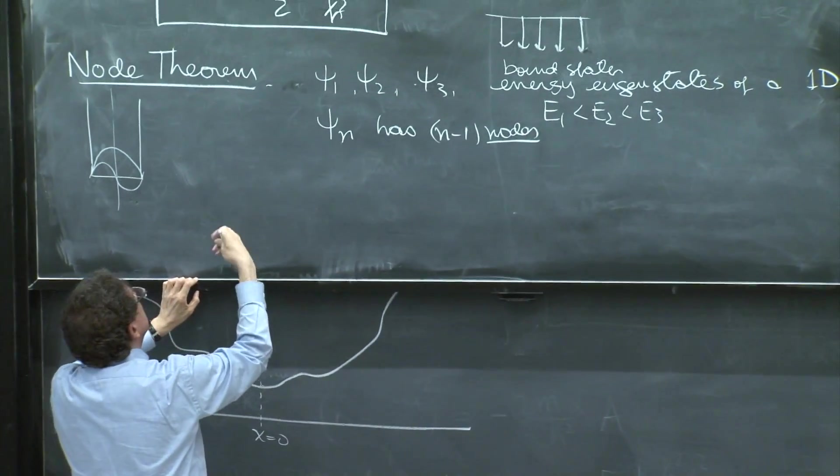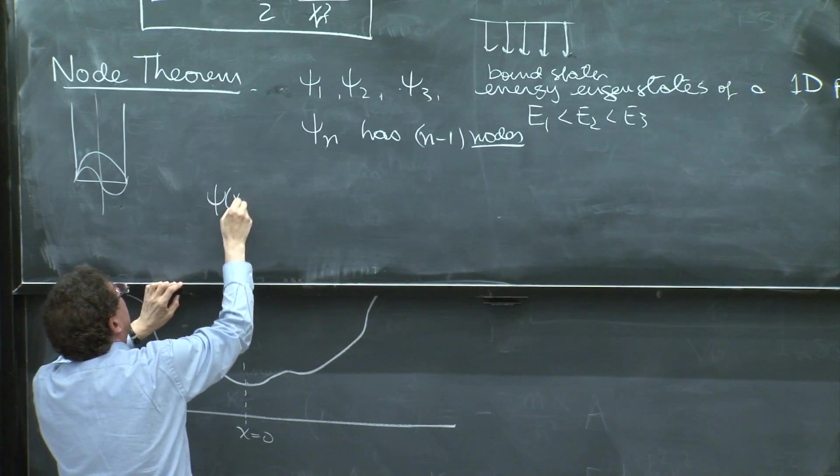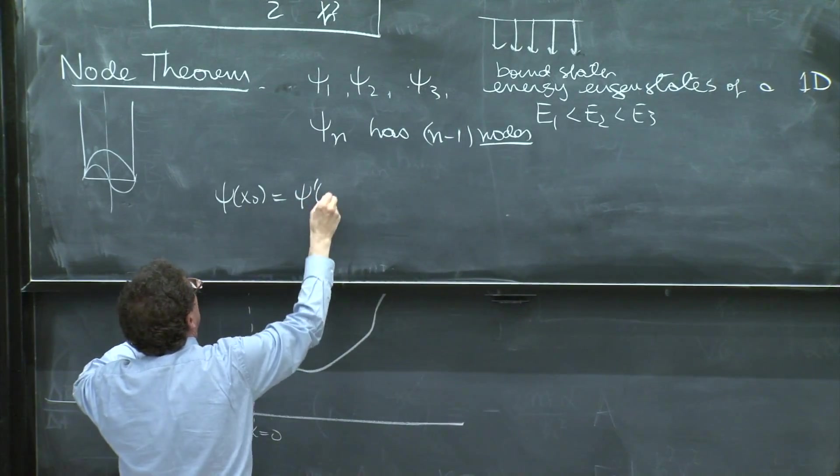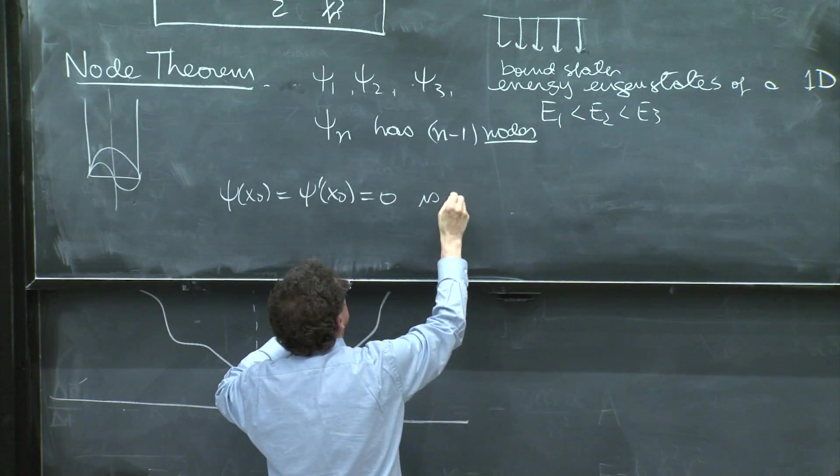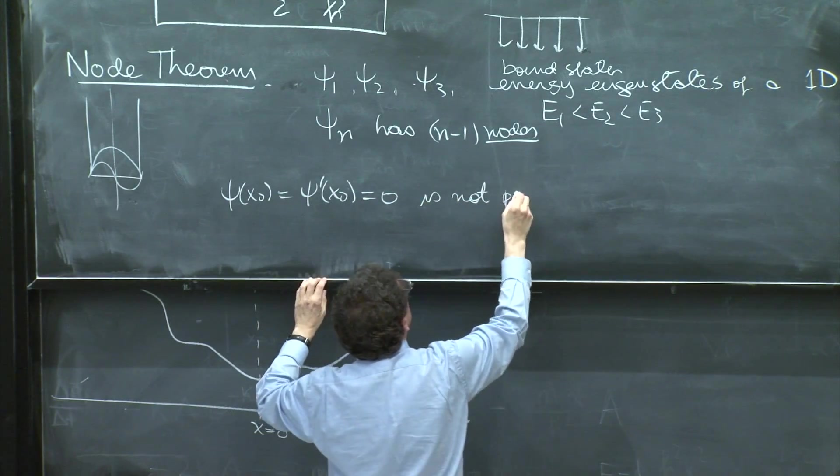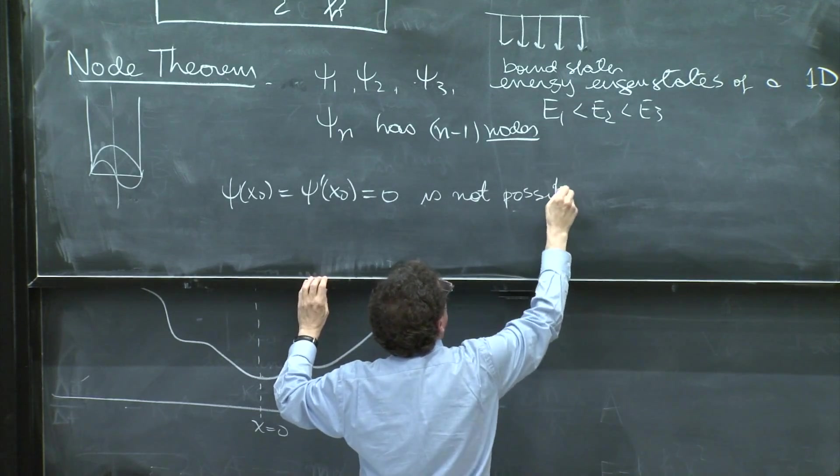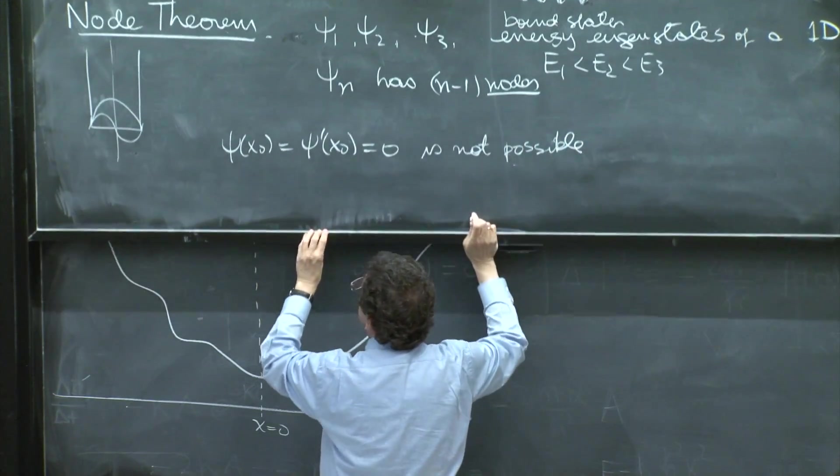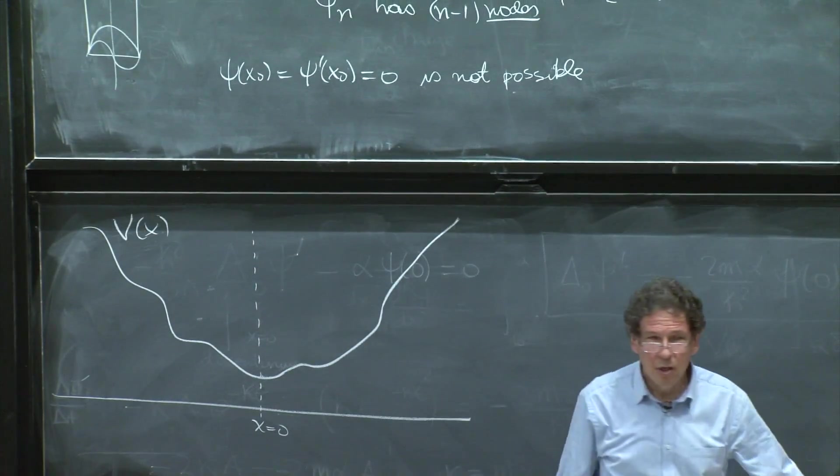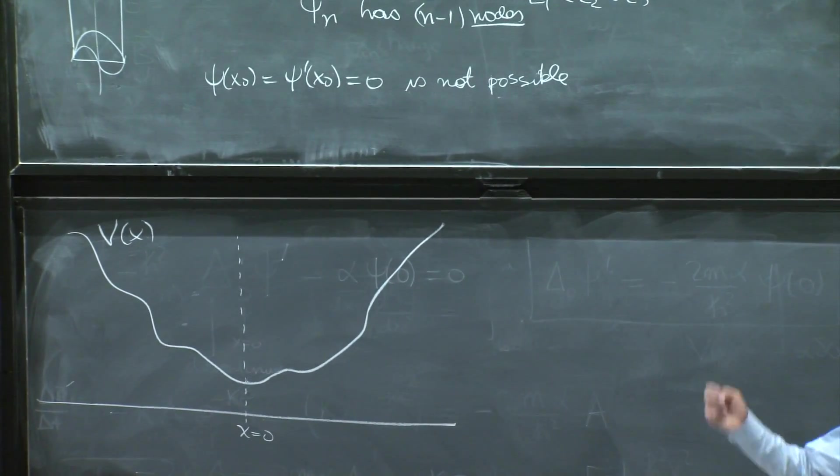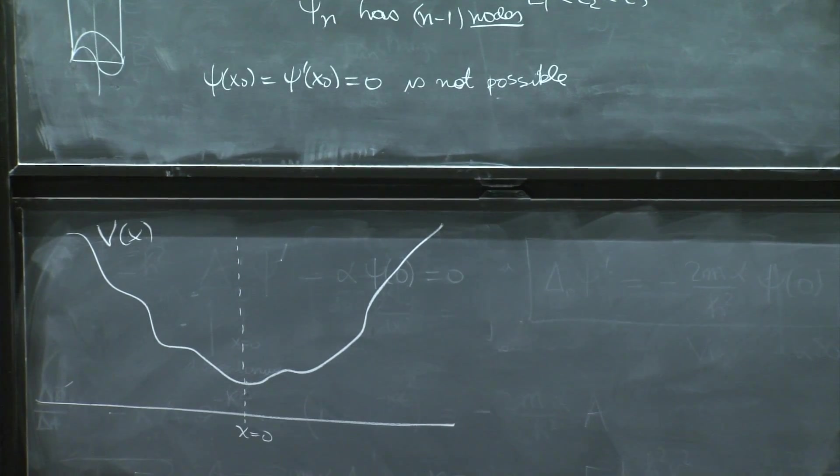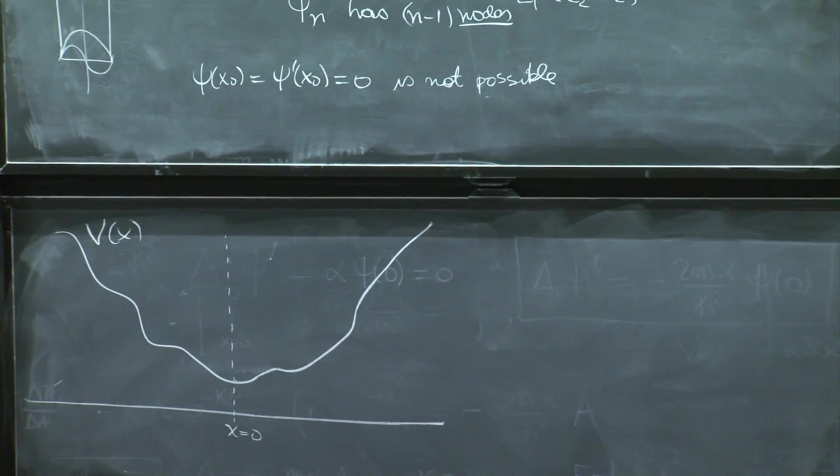So this is the first thing that the square well realizes this theorem. And the second is that ψ at x₀ being equal to 0 and ψ prime at x₀ being equal to 0 is not possible. For example, the wave function and its derivative cannot vanish at the same point. Please see the notes about this.